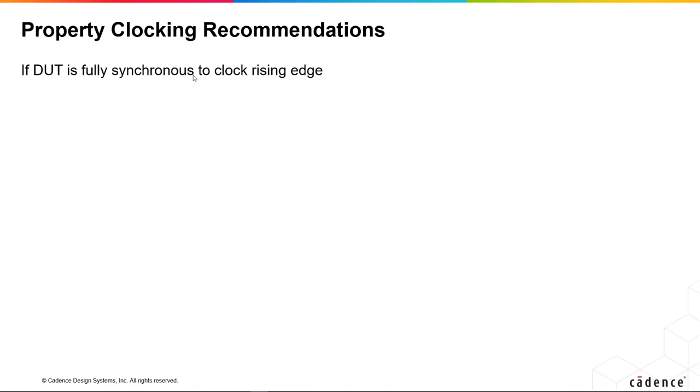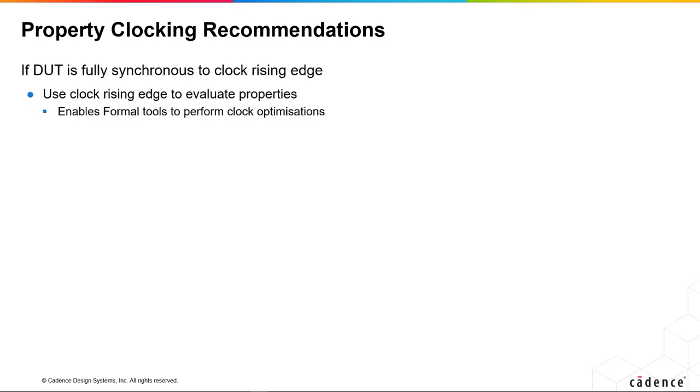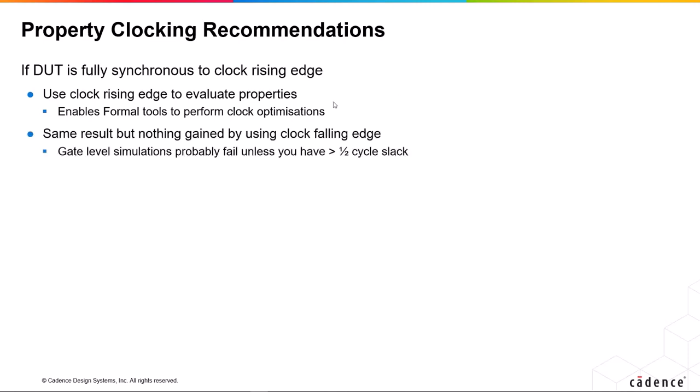Property clocking recommendations: if a DUT only changes state at a rising edge of clock, then it's essential that your properties only use the rising edge of a clock. This makes things more efficient for formal, because formal can recognise that if the design and the properties only change on the positive edge of clock, there is no need to evaluate anything on the negative edge of clock. It saves a lot of time — a very significant performance increase.